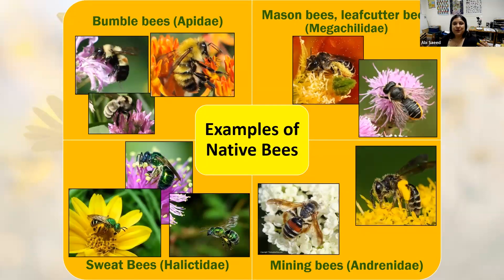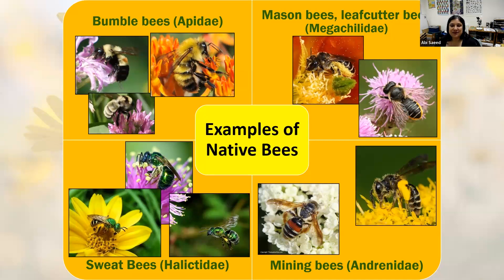Here are a few groups of native bee species you're likely to see in your landscape. Bumblebees are large, fuzzy, and charismatic. Mason bees and leafcutter bees are another interesting group. Sweat bees are smaller, shiny iridescent species that are bronze, brown, or shiny green. Mining bees are another group. This isn't a comprehensive list, but these are some of the ones you'll commonly see in your home garden.